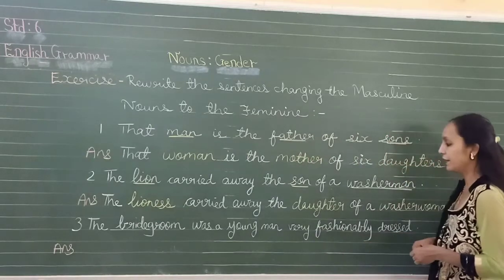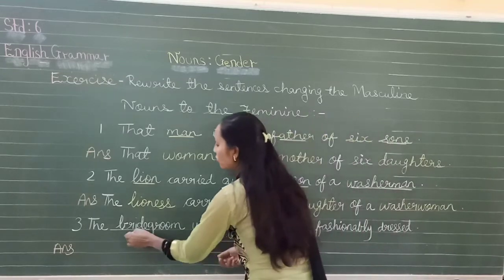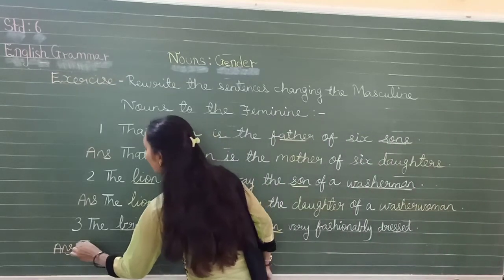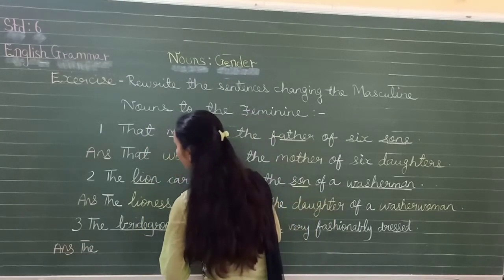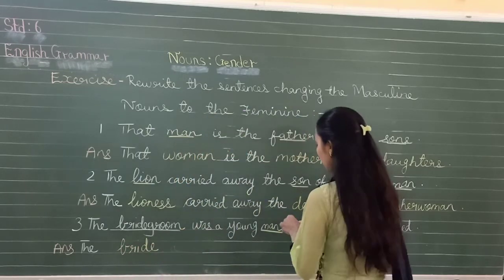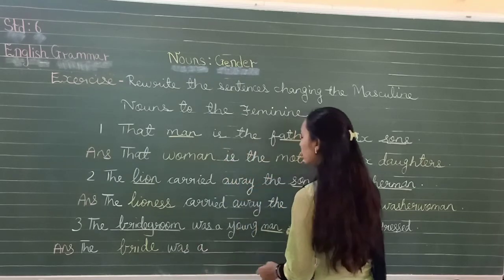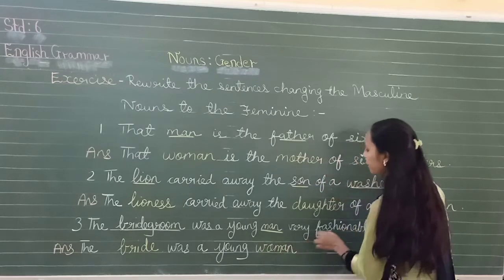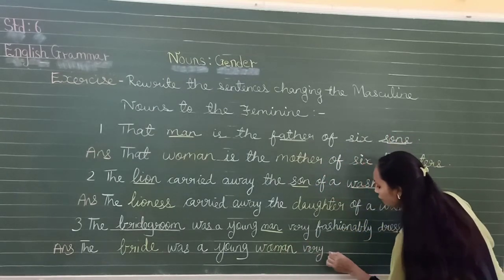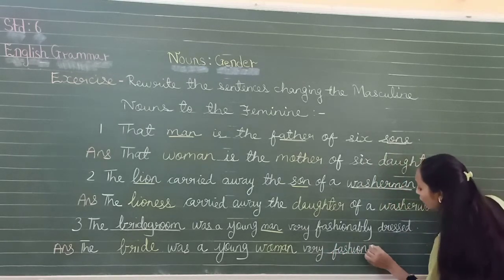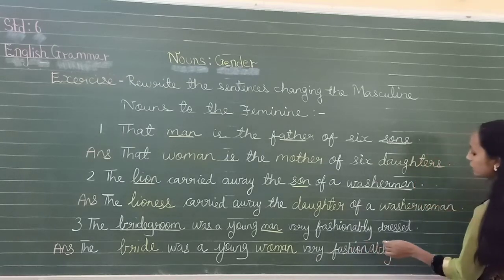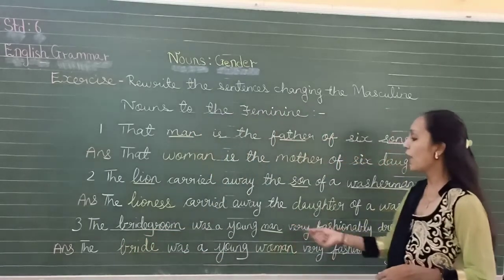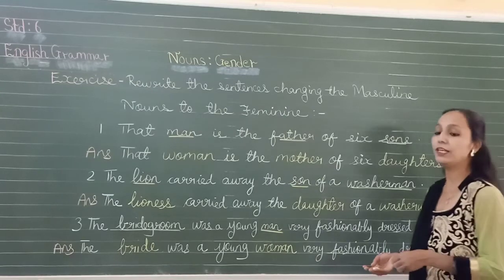'The bridegroom was a young man, very fashionably dressed.' The masculine nouns are bridegroom and man. Bridegroom changes to bride, man changes to woman. So: 'The bride was a young woman, very fashionably dressed.'